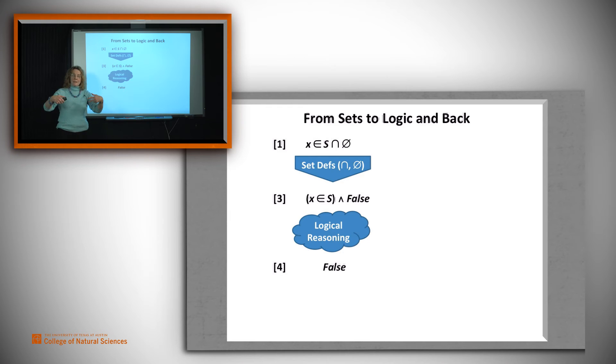And now we're going to use the set definitions, only we're going to run them in the other order. And what we're going to need to derive our conclusion is the definition of the empty set. And we're going to get that x is an element of the empty set. So that's how we're going to get from one to five.